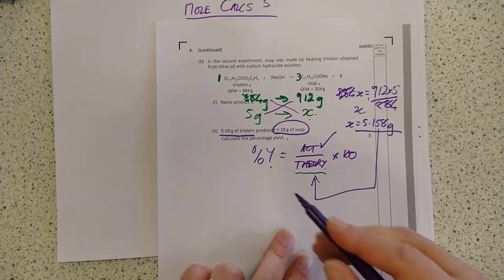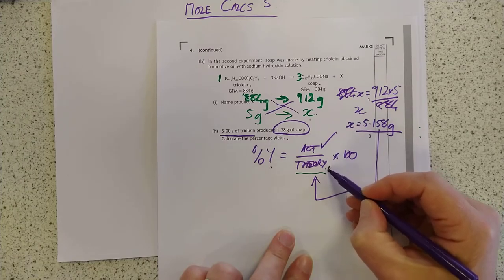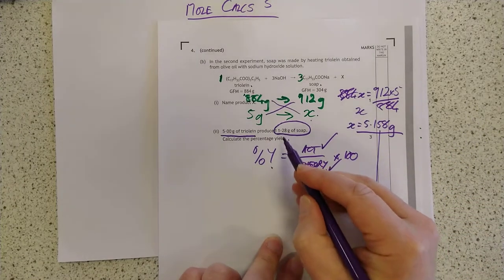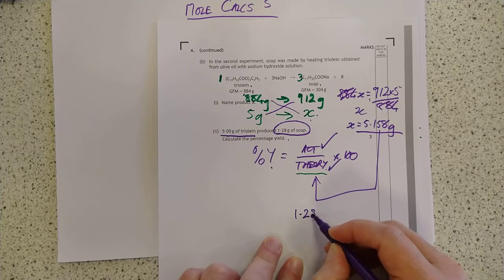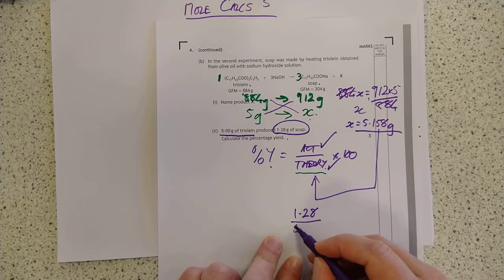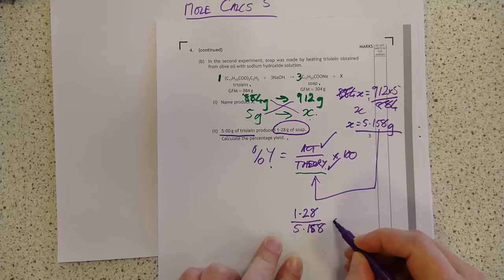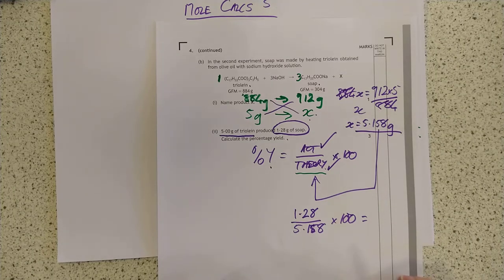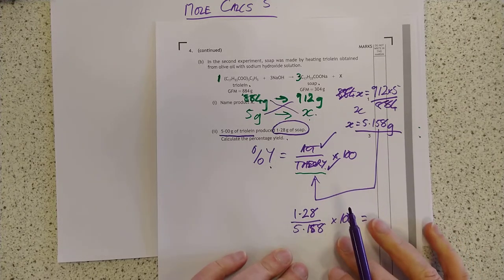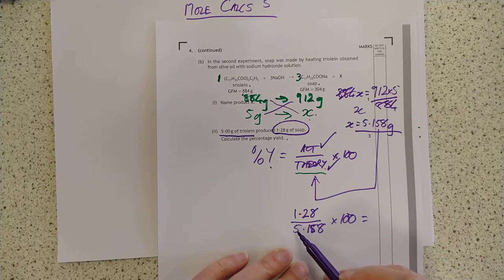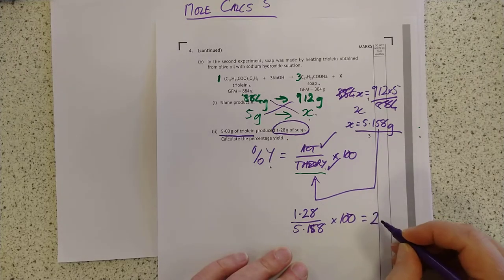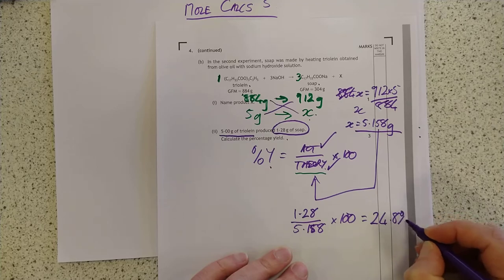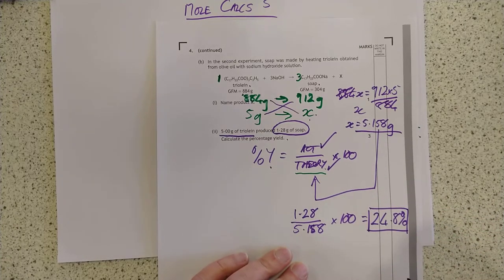Let's push ahead with this percentage yield calculation. We know the actual, we now know the theory. 1.28 is how much we actually made divided by 5.158 times 100. I like to do a little sanity check in my head. 1 over 5 is about 20% ish. And when we look at the calculator, 24.8%. Wonderful. 24.8%, that's my final percentage yield and we're done with this one anyway.